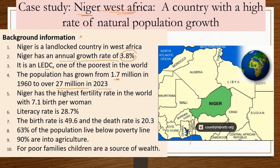Niger has the highest fertility rate in the world at 7.1 children per woman. It has a literacy rate of 28.7%. The birth rate is 49.6 and the death rate is around 20.3 per 1,000 — you can use this data to calculate natural population growth. 63% of the population live below the poverty line, and 90% are engaged in agriculture, which is why large families are common.